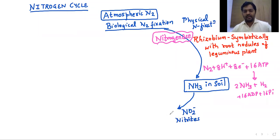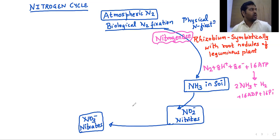Then the ammonia is converted into nitrites and nitrates by nitrifying bacteria. The nitrifying bacteria are Nitrosomonas and Nitrococcus.